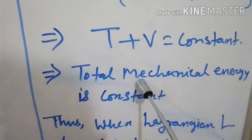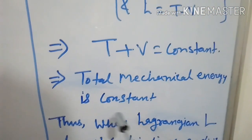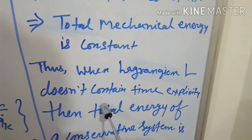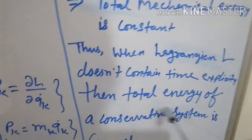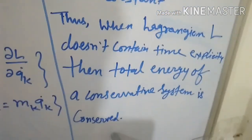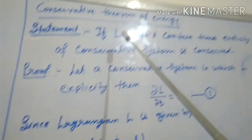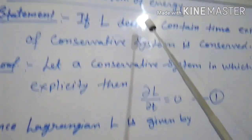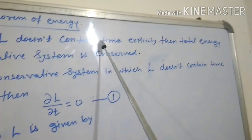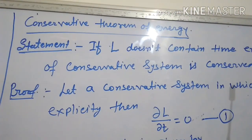That implies the total mechanical energy, that is kinetic energy plus potential energy, is constant. Thus, when the Lagrangian L does not contain time explicitly, the total energy of a conservative system is conserved. This is the complete proof of the conservation theorem of energy.